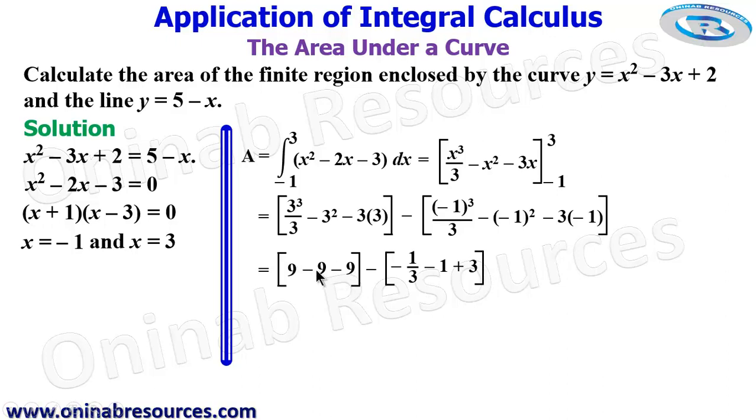So if we simplify this, we are going to have 9 - 9 gone. We are left with -9, then minus 1 2/3. Because -1 + 3 gives 2. So 2 - 1/3 gives 1 2/3.